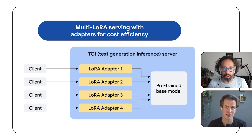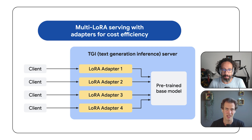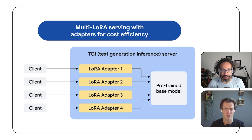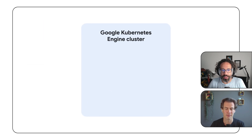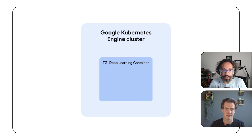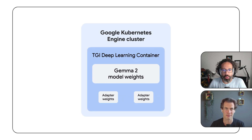How do you actually deploy Gemma 2 with multiple LoRa adapters with TGI DLC on GKE? Well, it's a multi-step process. First, you need to create a GKE cluster — we already covered this in previous videos, check the links in the description box. After that, you need to deploy Gemma 2 with multiple adapters using the TGI deep learning container on the cluster.